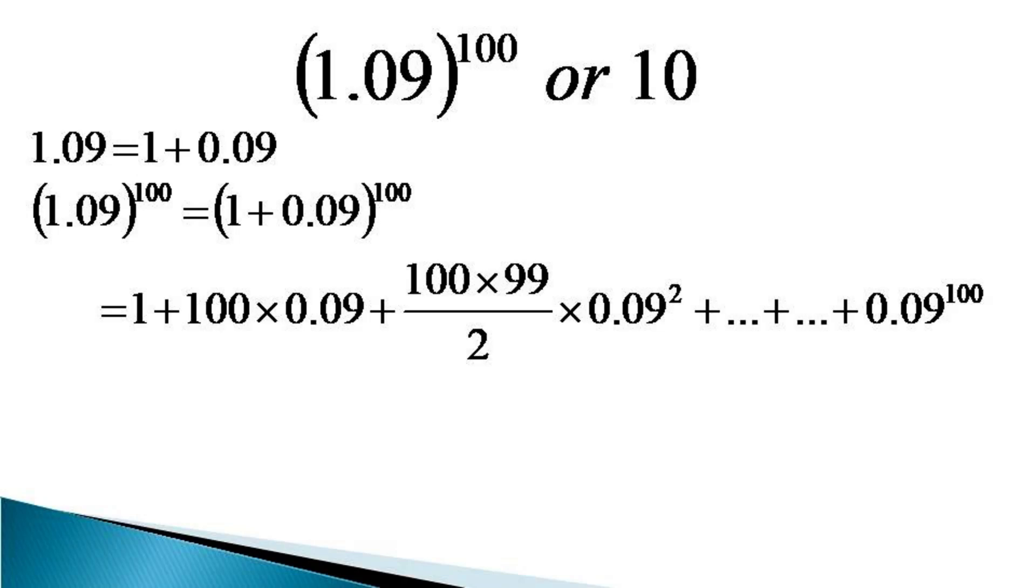When we see the second term in this expansion, it is 100 × 0.09, which becomes 9, and the expression becomes equal to 1 + 9 plus a positive number, as all the terms in this series are positive.